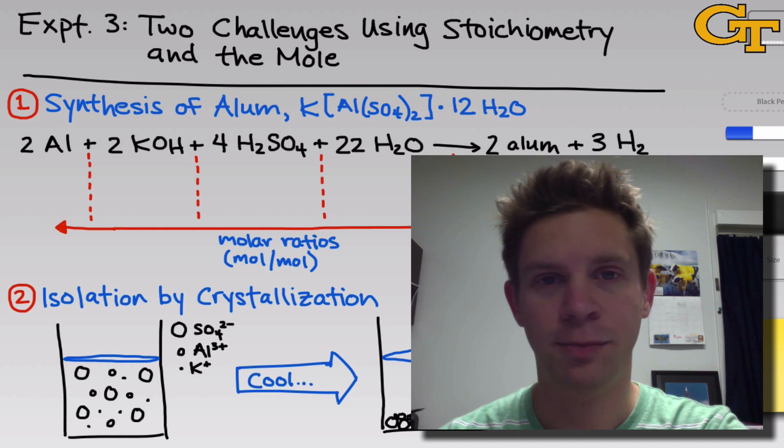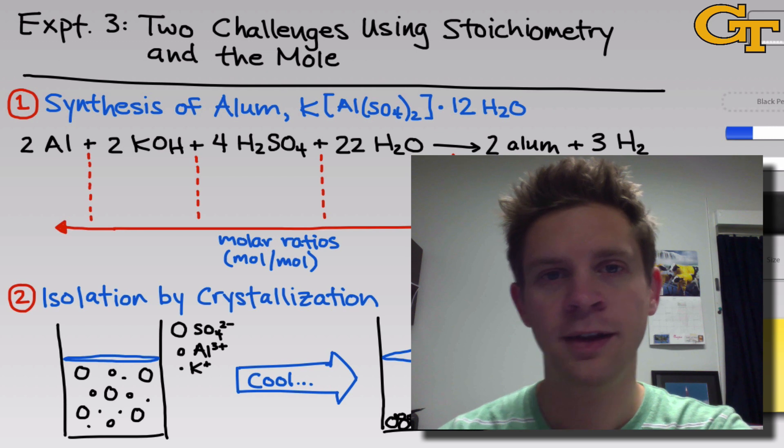Experiment 3 in Chem 1310 is titled Two Challenges Using Stoichiometry and the Mole. And there are two major parts to this experiment.